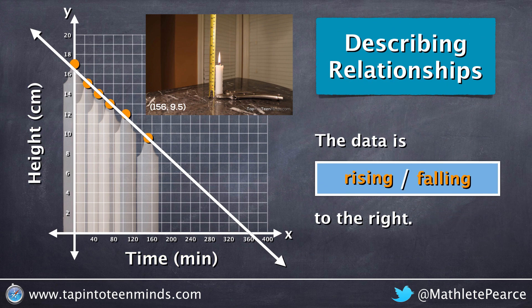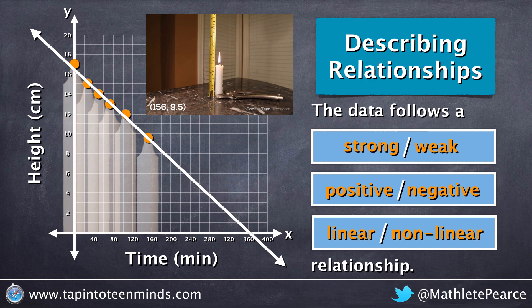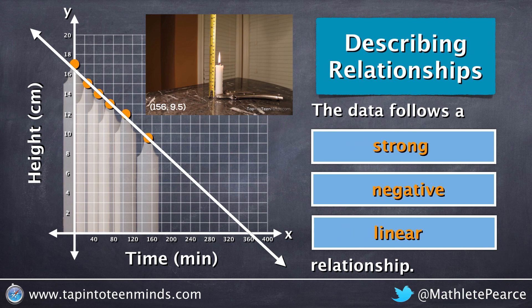It appears that the data is falling to the right, and we would classify this as a strong negative linear relationship.